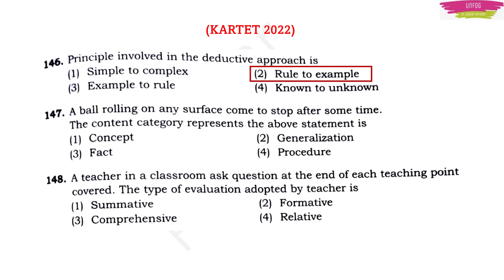Next question: a ball rolling on any surface comes to stop after some time — what content category does this statement represent? Options are: concept; generalization; fact; procedure. The correct answer is that it is a concept-based statement. Next question: a teacher asks a question at the end of each teaching point covered — what type of evaluation is the teacher adopting? It is formative assessment, because after each point the teacher asks a question — it is a short-term assessment.